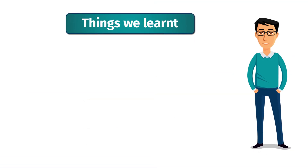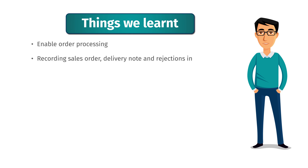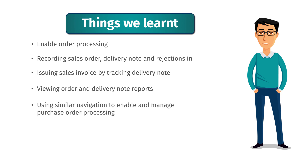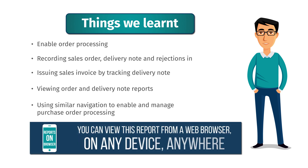A quick recap of things we learned in this session: enabling order processing, recording sales order, delivery note, and rejection in; issuing sales invoice by tracking delivery note; viewing order and delivery note reports; and using similar navigation to enable and manage purchase order processing. With the latest Tally ERP 9, you can access order reports from a web browser on any device, anywhere.